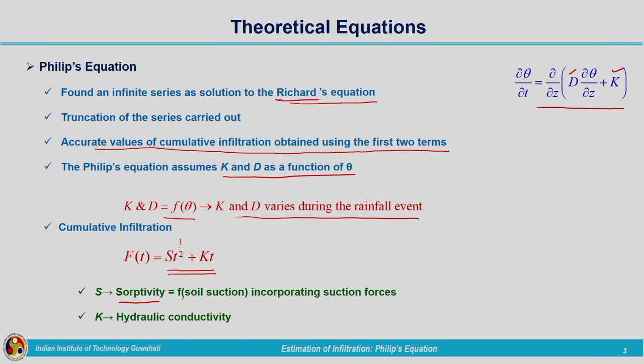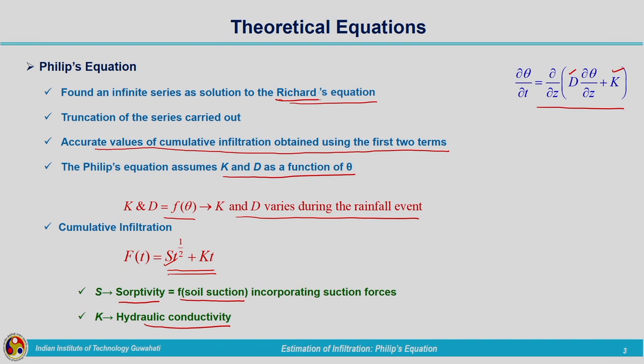S is nothing but the sorptivity — it is a function of soil suction — and K is the hydraulic conductivity. The two terms address two driving forces separately. The main forces causing flow through unsaturated porous media are suction force and gravity force. Suction force will be predominant when the soil is in a drier or unsaturated state, so S times t to the power of half is predominant during the unsaturated state. As more and more water infiltrates, the pores fill up and the effect of suction reduces; the main driving force becomes gravity, represented by the second term K times t.